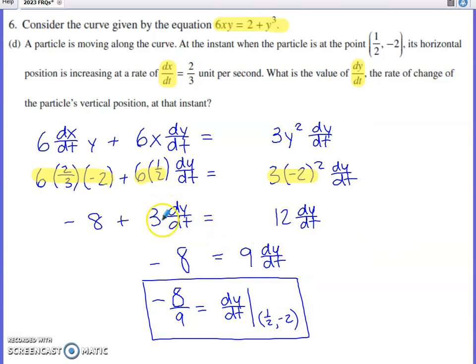If you do that, you can move these three dy/dt's over to join the 12. So I'll give you nine dy/dt's on the right. Dividing by nine gives you negative eight-ninths for the value of dy/dt at that ordered pair.